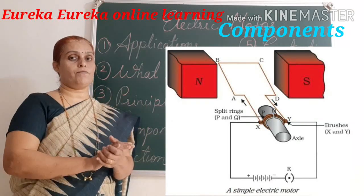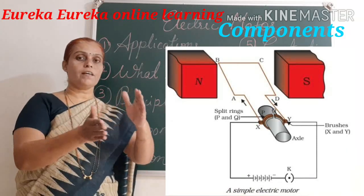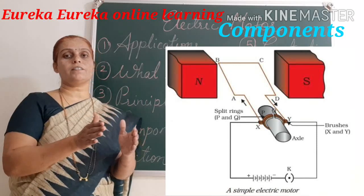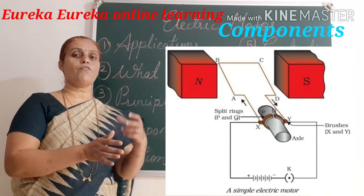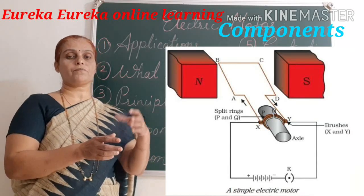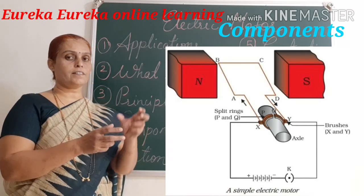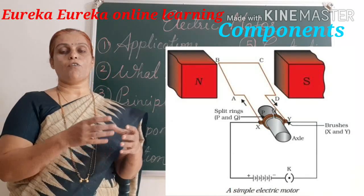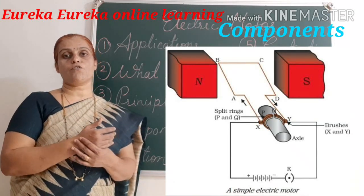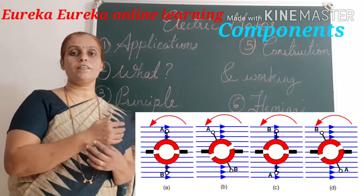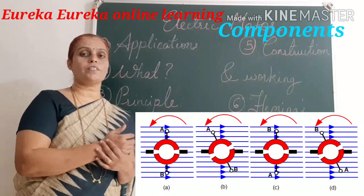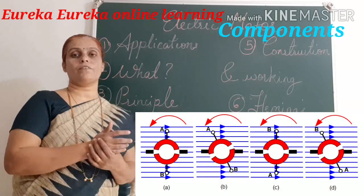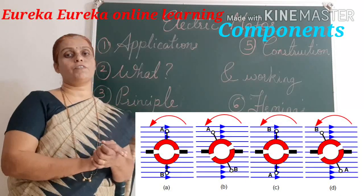When the coil is placed in the magnetic field, it experiences a force and rotates in the presence of the magnetic field. The axle facilitates the rotation of this coil. Commutators or split rings are also used — these are semi-circular rings used to reverse the direction of current flowing through the coil.